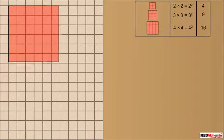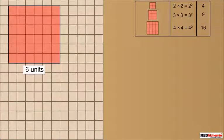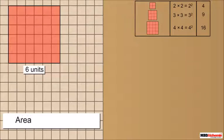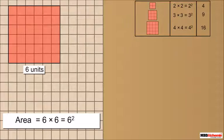Consider a square of side 6 units. It is further divided into 36 unit blocks. The area of this square is 6 into 6, which we write as 6 squared, which is equal to 36.